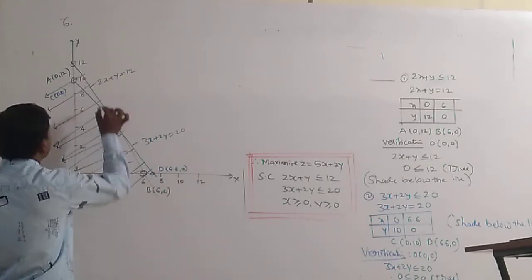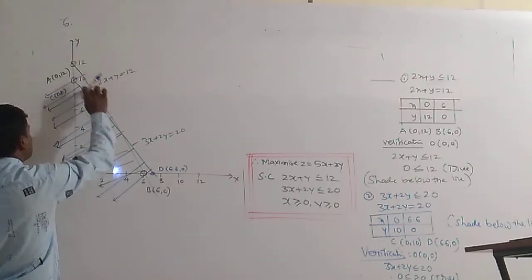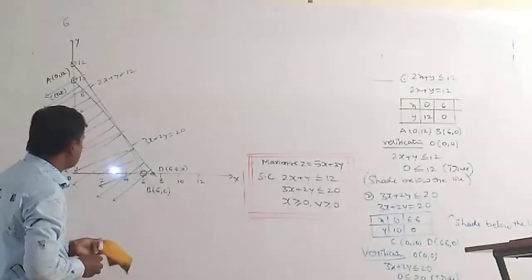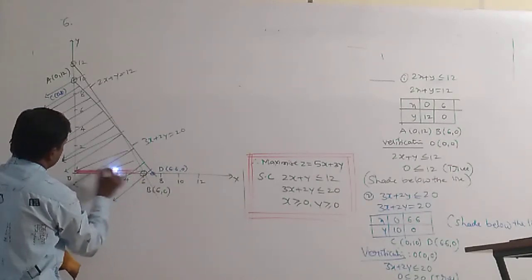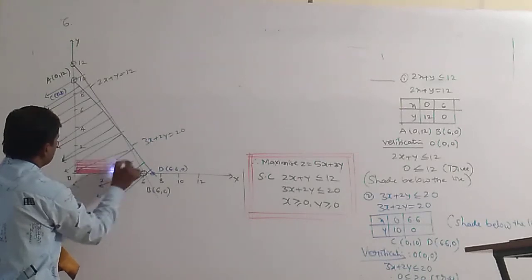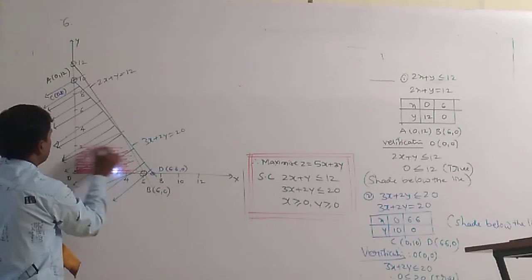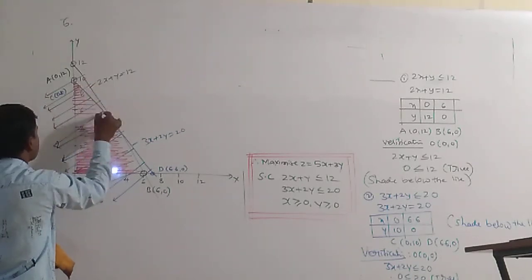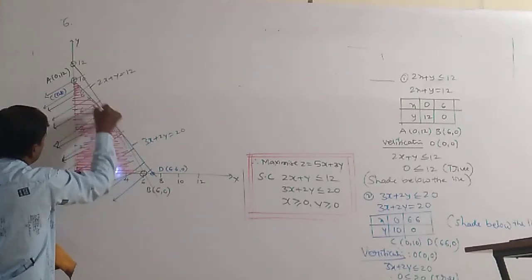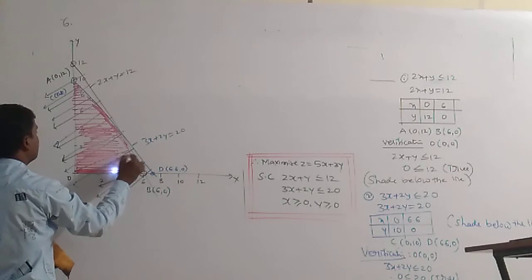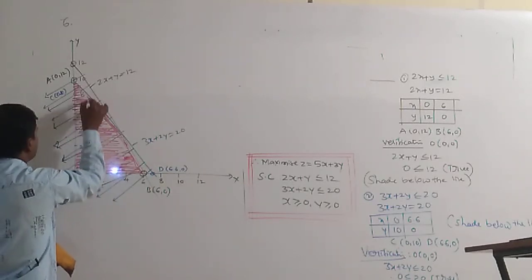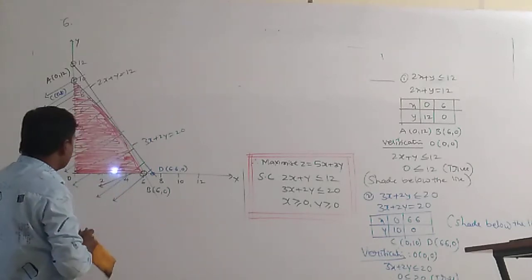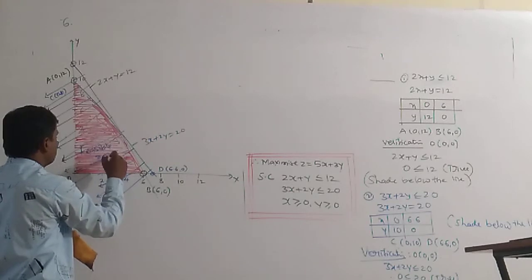Observe carefully — we are getting two shaded regions, but they are not both common. The common region where both lines overlap is the feasible region. Both the black and blue lines share this point side, which gives the feasible region.